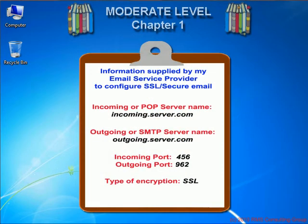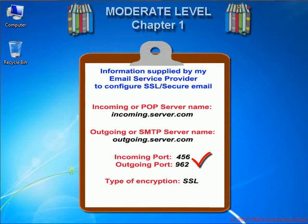Most email clients support SSL and it should be simple to locate. Here are the items that my email service provider presents in their documentation for using an SSL email client: they provided the POP or incoming server name, the SMTP or outgoing server name, as well as which ports each will use, and the type of security encryption — in this case SSL. It's important to recognize these as email settings that you'll need to have and that will appear in your email client configuration screens.